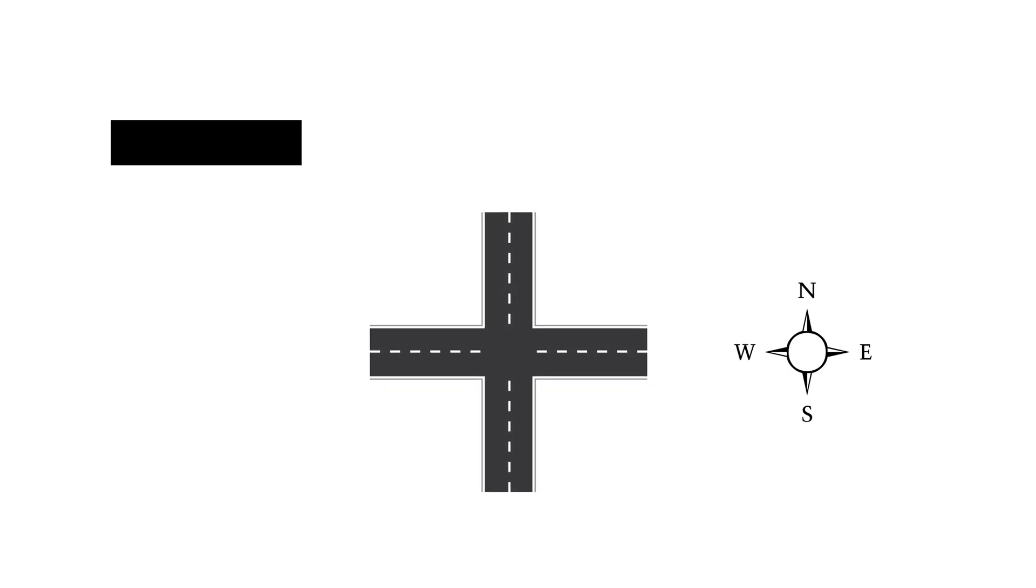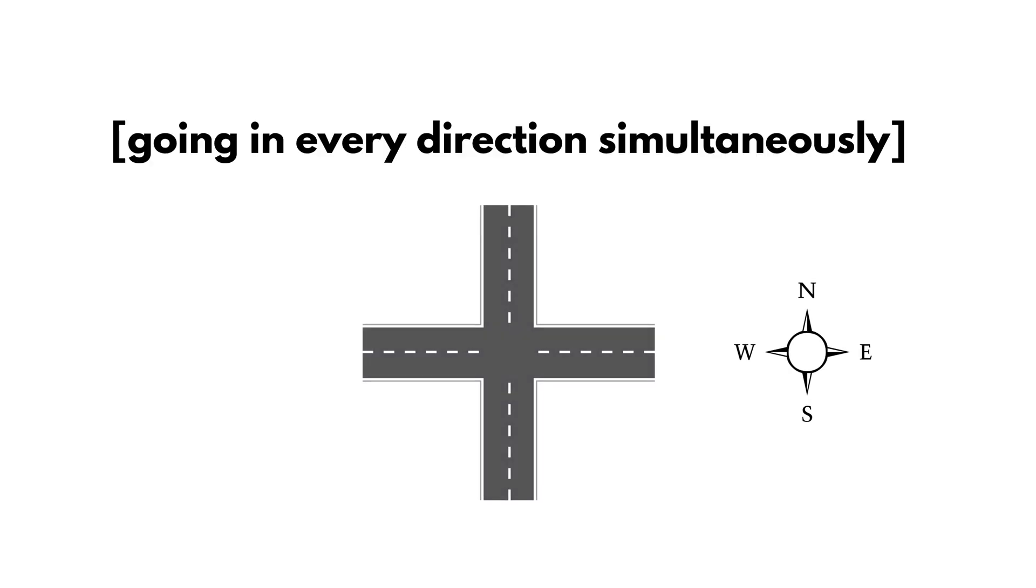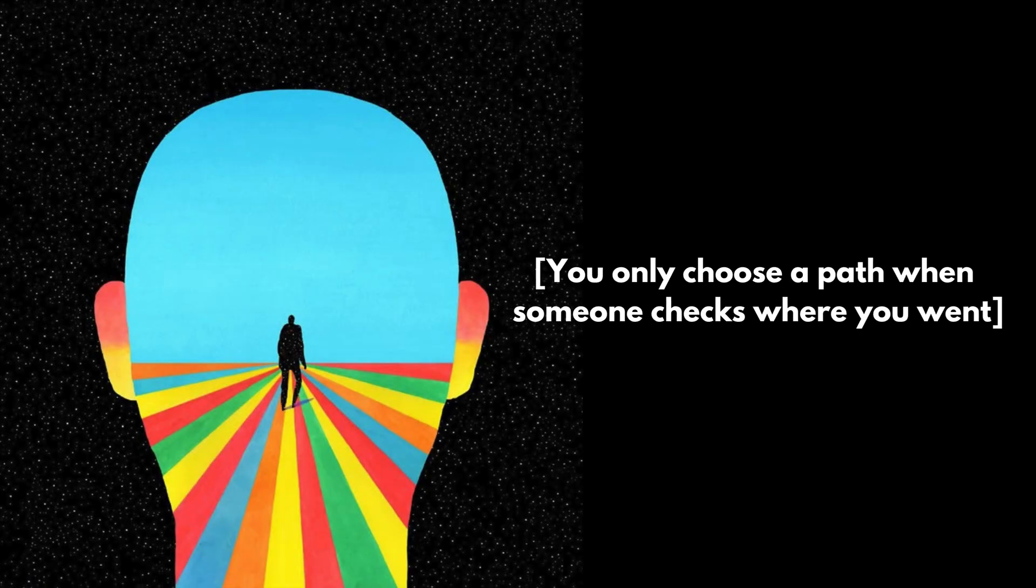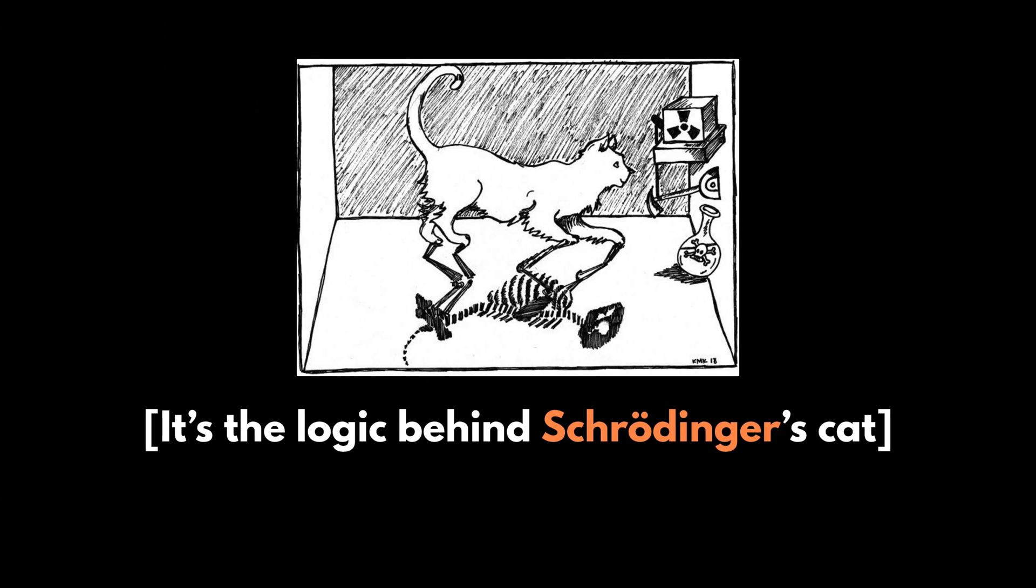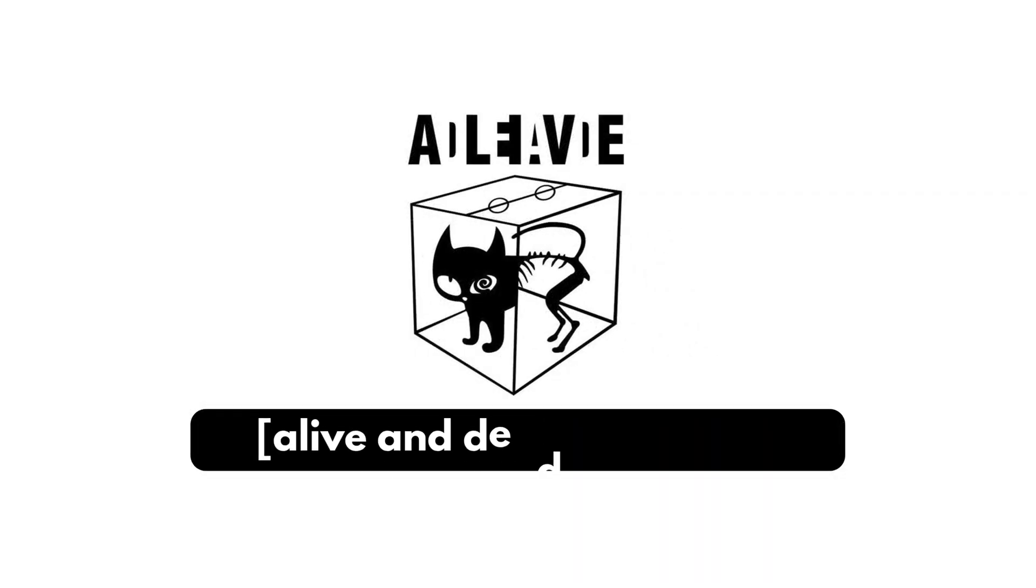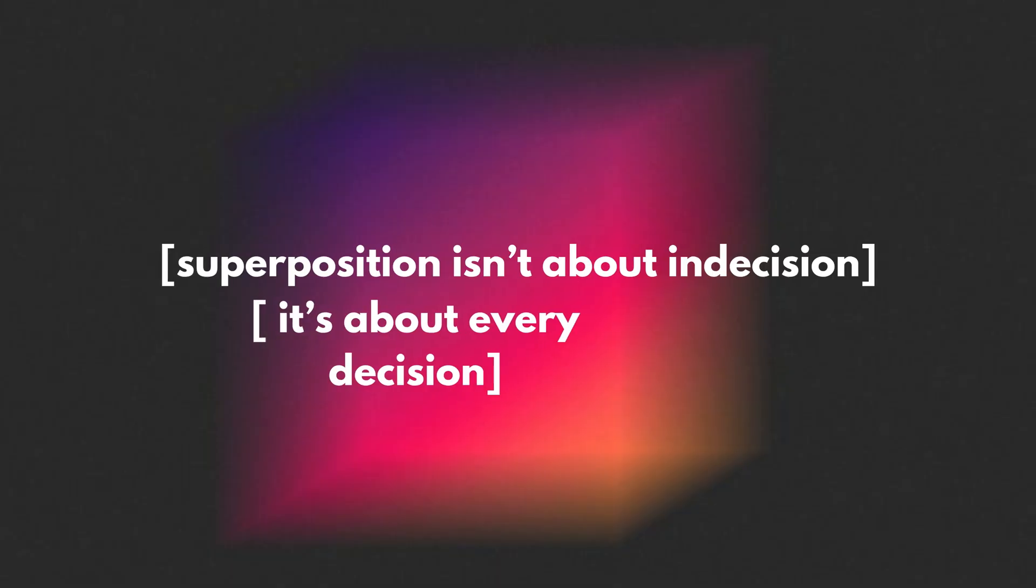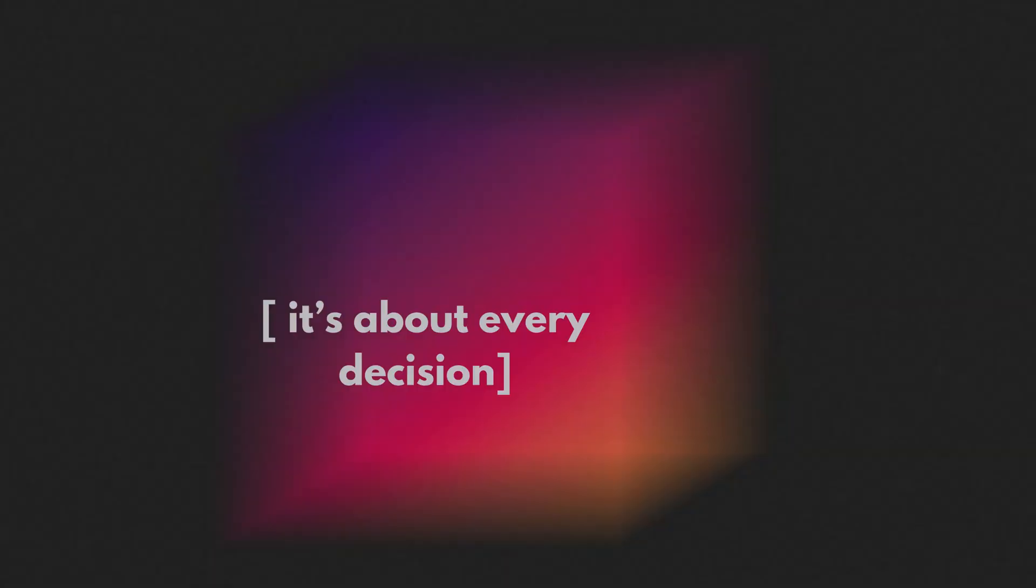Think of it like standing at a crossroads and going in every direction simultaneously. You only choose a path when someone checks where you went. It's the logic behind Schrodinger's cat. Alive and dead in a sealed box until someone opens it. Superposition isn't about indecision. It's about every decision.